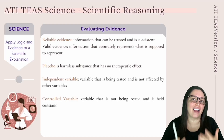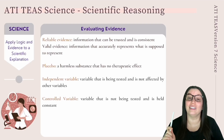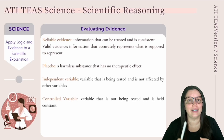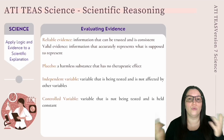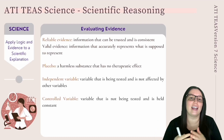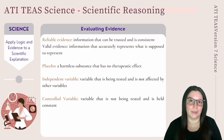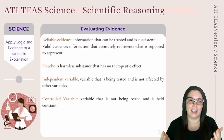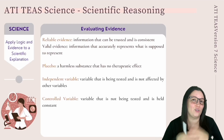When evaluating evidence, scientists look at whether it is reliable and valid. Reliable evidence is information that can be trusted and is consistent every time. Valid evidence accurately represents what it is supposed to represent. To ensure evidence is free from bias, scientists experiment with placebo groups — a harmless substance with no therapeutic effect — so that any effects seen are due to the drug and not any other factor.